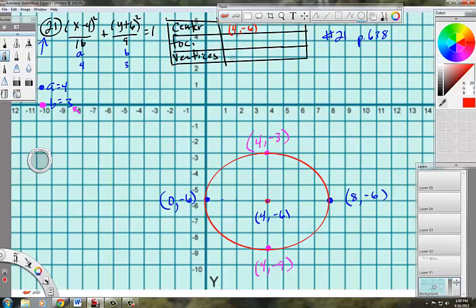The answer to the vertices here are all four of these points. The two pink points, 4 comma negative 3, 4 comma negative 9, and of course, 8 comma negative 6, and 0 comma negative 6. Those would all go in right here for the vertices. So that's those four answers there.